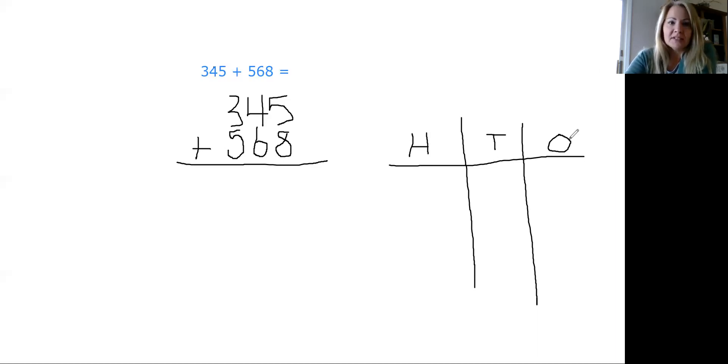So I don't have place value discs. So actually, maybe I'll try to use a stamp for this. I'm going to do the number 345 with these hearts today, just to make it easier for me. So I've got three hundreds in 345. And I've got four tens. And I've got five ones. There we go. This represents the number 345.